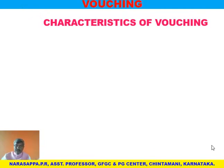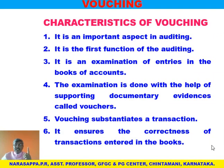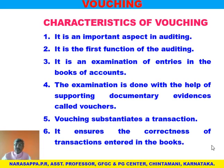What are the characteristics of vouching? First, in auditing the first important aspect is vouching — transaction, voucher verification, and examination. If all the things are correct, auditing is done. It is the first function of auditing — from vouching itself, auditing starts. Second, it is an examination of entries in the books of accounts — we verify all transactions with supporting documents. Third, the examination is done with the help of supporting documentary evidences called vouchers.